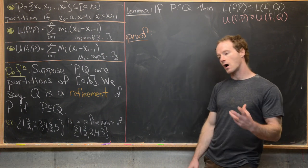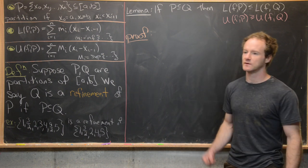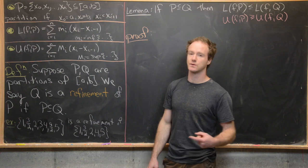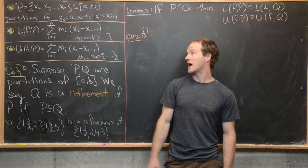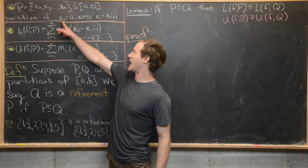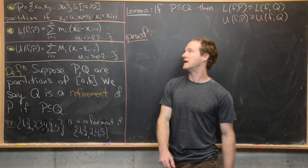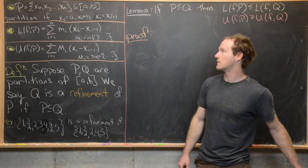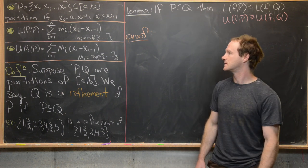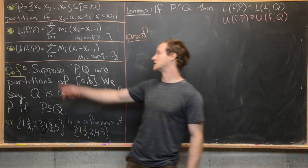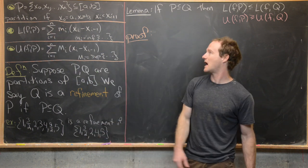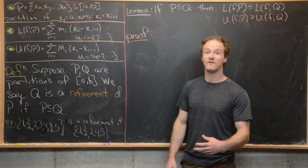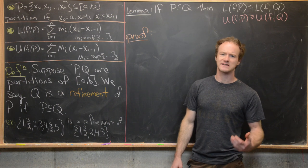We want to assume that f is a function from the closed interval [a,b] to the real numbers which is bounded. Then we say that P, which is a finite set of numbers x₀, x₁ up to xₙ, is a partition of [a,b] if x₀ equals a, xₙ equals b, and xᵢ is less than xᵢ₊₁ for all appropriate i. The lower sum of f with respect to partition P is the sum from i=1 to n of mᵢ times (xᵢ minus xᵢ₋₁), where mᵢ is the infimum of the values of the function on the sub-interval [xᵢ₋₁, xᵢ].